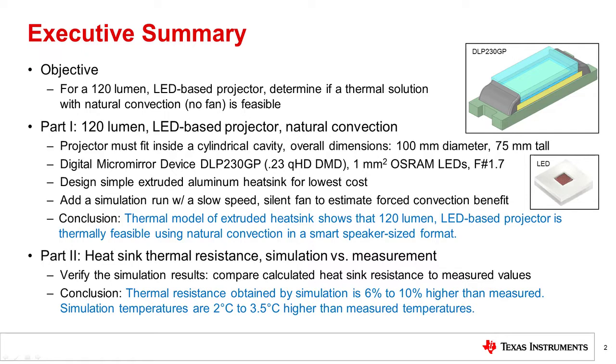We will discuss this in Part 1 of the presentation. The DMD chosen for this project is 0.23 QHD DMD and the LEDs are 1 millimeter squared Osram LEDs, which are Osram's latest iteration high efficiency LEDs. Optics used would have an F-number of 1.7. This would be a second iteration that we considered, and in this case we wanted to make a design that would be of low cost, which means a heat sink that could be a simple extruded piece of aluminum that is sliced into pieces with no heat pipes that would add to the cost.